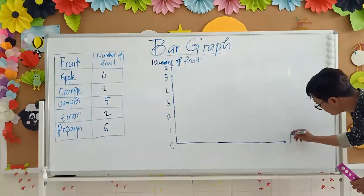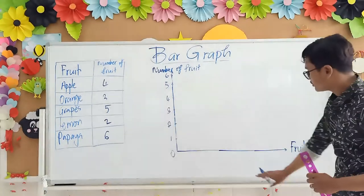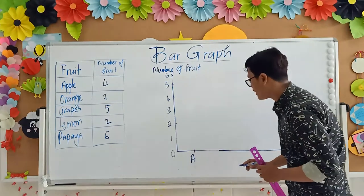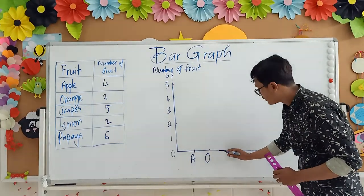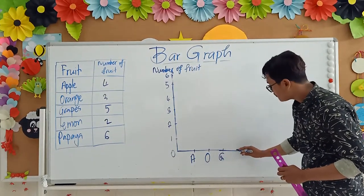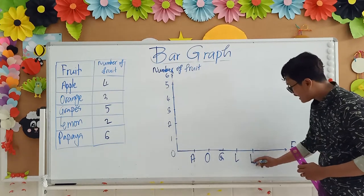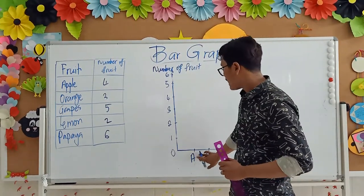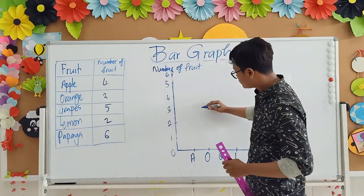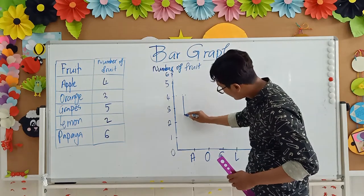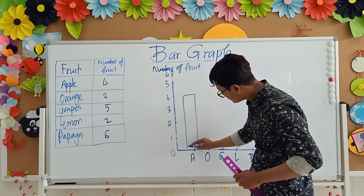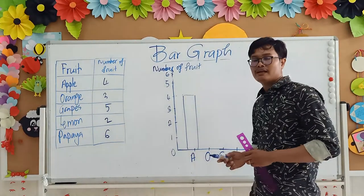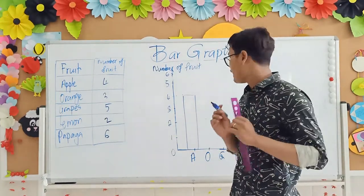I use my ruler from this one. Then one, two, three, four, five, six. And here you need to write the fruit. You can say it's number of fruit or write only fruit. So number of fruit. Of course I write A. Orange I write O. Grapes I write G. And then lemon I write L, and papaya I write P.